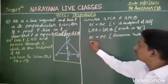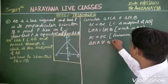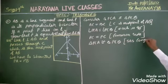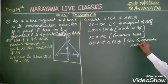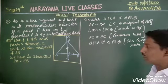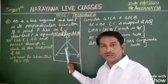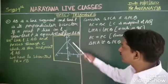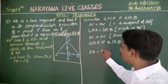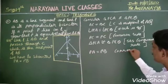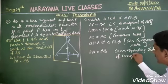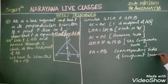Therefore, triangle PCA is congruent to triangle PCB by the SAS congruence rule. Now, since the two triangles are congruent, their corresponding parts are equal. So I can say PA is equal to PB — corresponding sides of congruent triangles. That is my required proof.